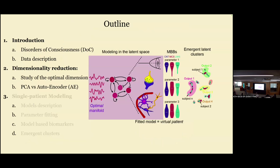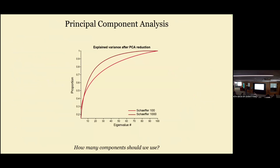Why do dimensionality reduction? You can have 100 or 1,000 regions, each with a time series — that's a lot of data. Dimensionality reduction gets rid of noise and keeps only the informative features. If there's redundancy from the parcellation choice, you also eliminate that. The most basic approach is principal component analysis.